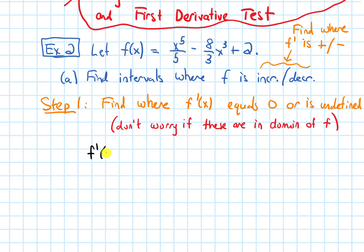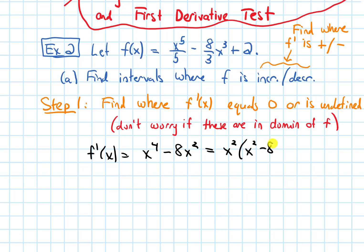So let's take the derivative. The 5 is going to come down and I'll get x to the 4. The 3 is going to come down, cancel with the 3 on the bottom, to give me minus 8x squared. We need to figure out when this is going to be 0 or undefined. So let's factor it — we can take out an x squared to be left with x squared minus 8.